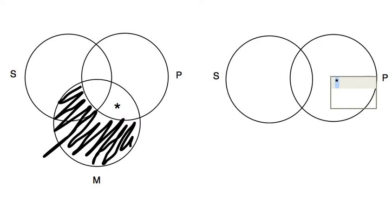And so the asterisk, which represents the individual, should go right here. Anywhere here. It can't go here because then that's something that's a P and that's also an S. But we're saying something is a P but is not an S.